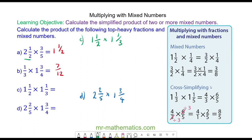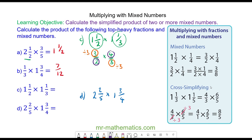OK, for question C, we're going to convert to a top-heavy fraction, which is 2 halves plus 1 half, giving 3 over 2. And we're going to convert the other mixed number to a top-heavy fraction, which is 4 over 3. We can cross-simplify the 3s, dividing both by the highest common factor. And we can also cross-simplify, dividing both by 2. So we have 1 over 1 multiplied by 2 over 1, which gives us 2.